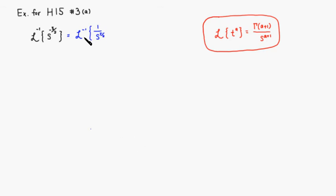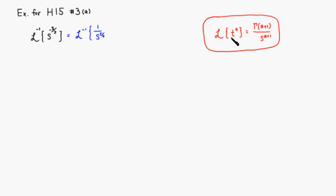Remember that the Laplace transform of t to the a is gamma of a plus 1 over s to the a plus 1. So if we had a gamma of 5 halves, we can go back to t to the 3 halves.